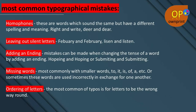Most common typographical mistakes: First, homophones — these are words that sound the same but have different spelling and meaning, like 'right/write' or 'dear/deer.' Next, leaving out silent letters, for example 'February' or 'listen.' Adding an ending: mistakes can be made when changing the tense of a word by adding an ending, such as 'hoping' or 'submitting.' Missing words: most commonly the smaller words — 'to,' 'it,' 'is,' 'of,' 'a,' etc. — or sometimes these words are used incorrectly in exchange for one another.